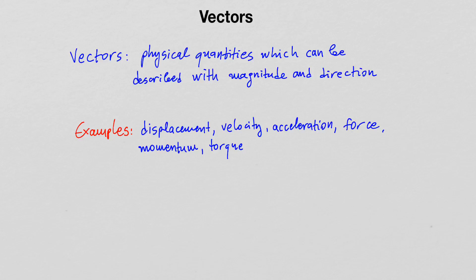However, if I wanted to state the velocity of a moving object, I also must state a direction of motion. So if I say 60 miles per hour due north, that is the velocity of the object. If I only stated that the object was moving at 60 miles per hour, that would simply be the speed of motion, which is a scalar quantity. Velocity contains more information than the speed of the object.